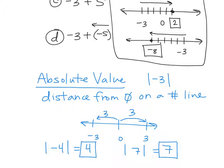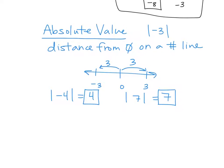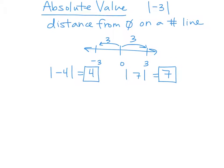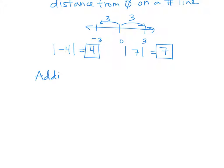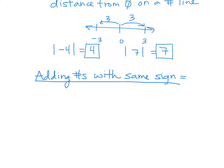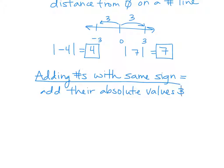With that, that's what leads us into how you add different sets of numbers. So if we are adding numbers with the same sign — so they're both positive or they're both negative — there's a rule that goes along with it. When you're adding numbers with the same sign, all you do is you add the absolute values, and then you keep the sign that you started with. So you're going to add their absolute values and keep their sign.